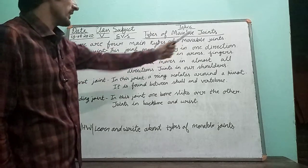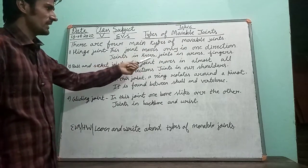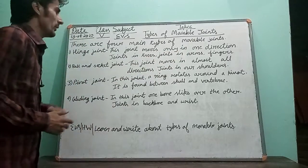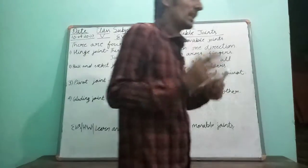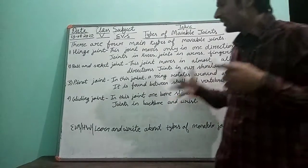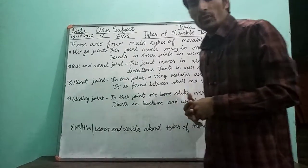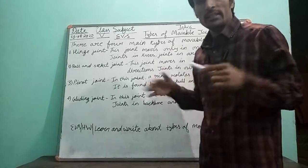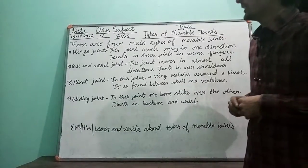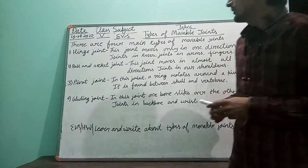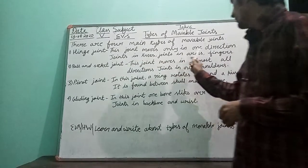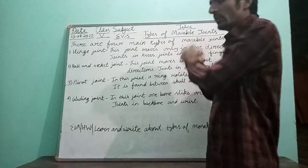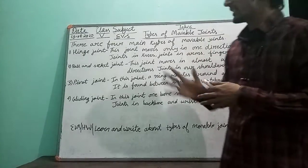First is the hinge joint. This joint moves only in one direction. Hinge joints give movement to the body only in one direction. Examples are joints in the knees, arms, and fingers. These body parts can move only in one direction.